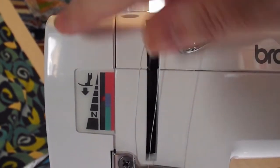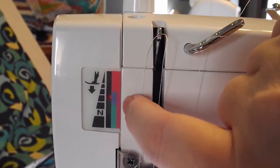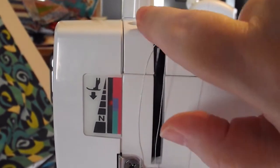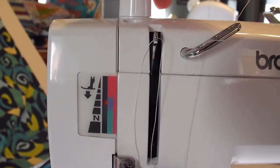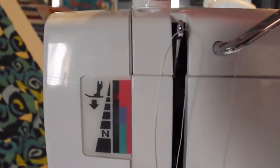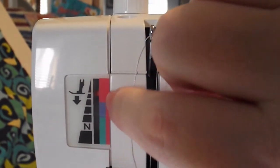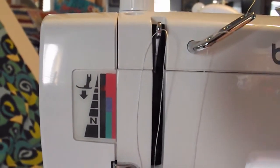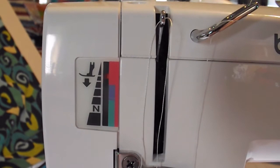So the way you adjust that, because right now I have it set where it's more like those feed dogs are up, and I want to actually take the pressure off. So what I do is I just turn that counterclockwise. And I find that that is enough. Having it in this area is enough. It takes enough of the pressure off to where I can do my free motion work.